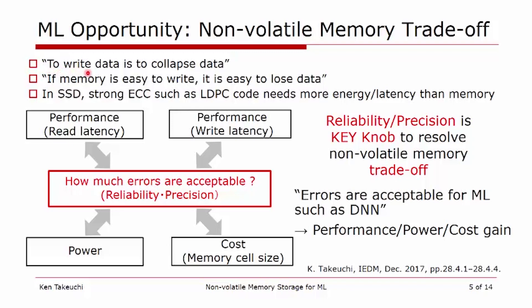In this talk, I would like to emphasize that if we can relax the requirements of reliability or precision of memory cells, we can gain performance, power, or cost advantages. In the case of machine learning like deep neural networks, this is naturally acceptable. We call this kind of memory approximate non-volatile memory, using the terms of general approximate computing. We will tolerate errors and reduce accuracy at the chip level to gain performance or power advantage, but we need to secure accuracy at the application level, such as inference of deep neural networks.